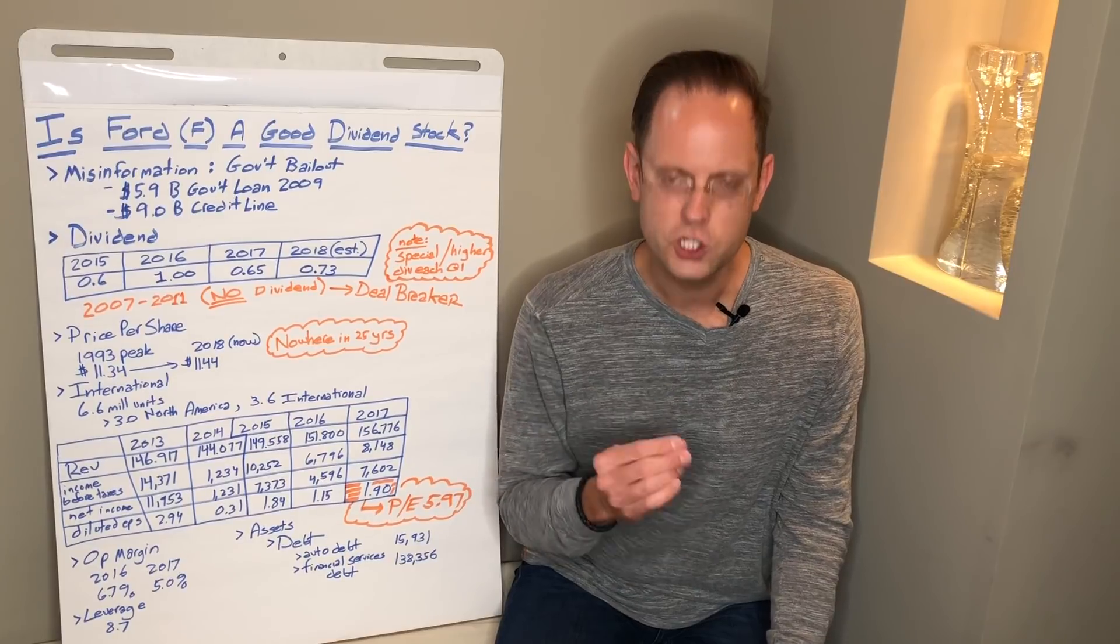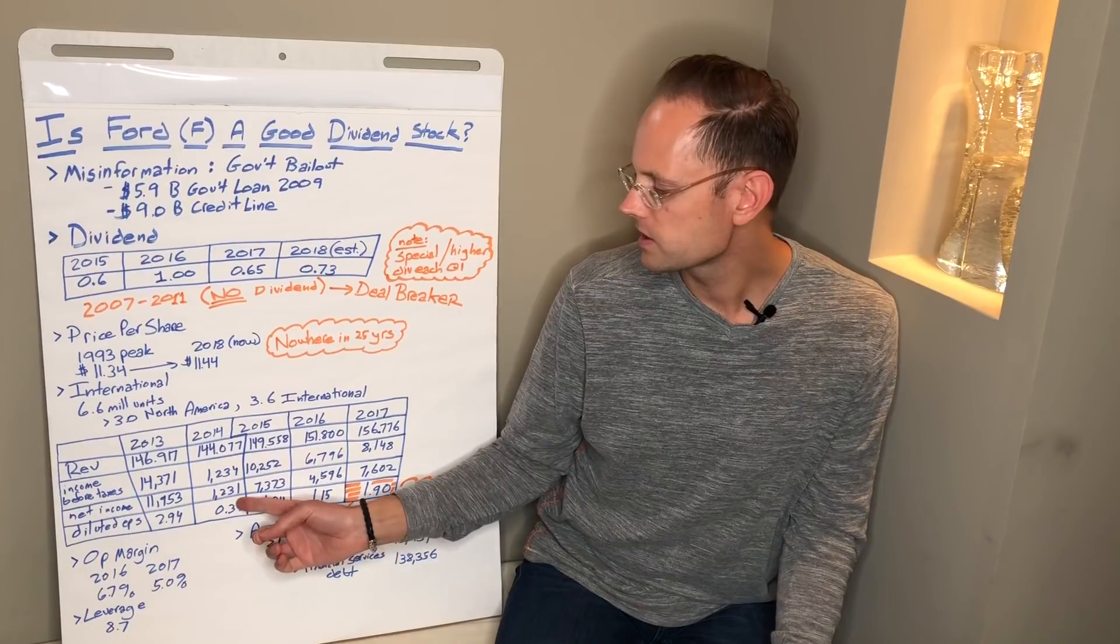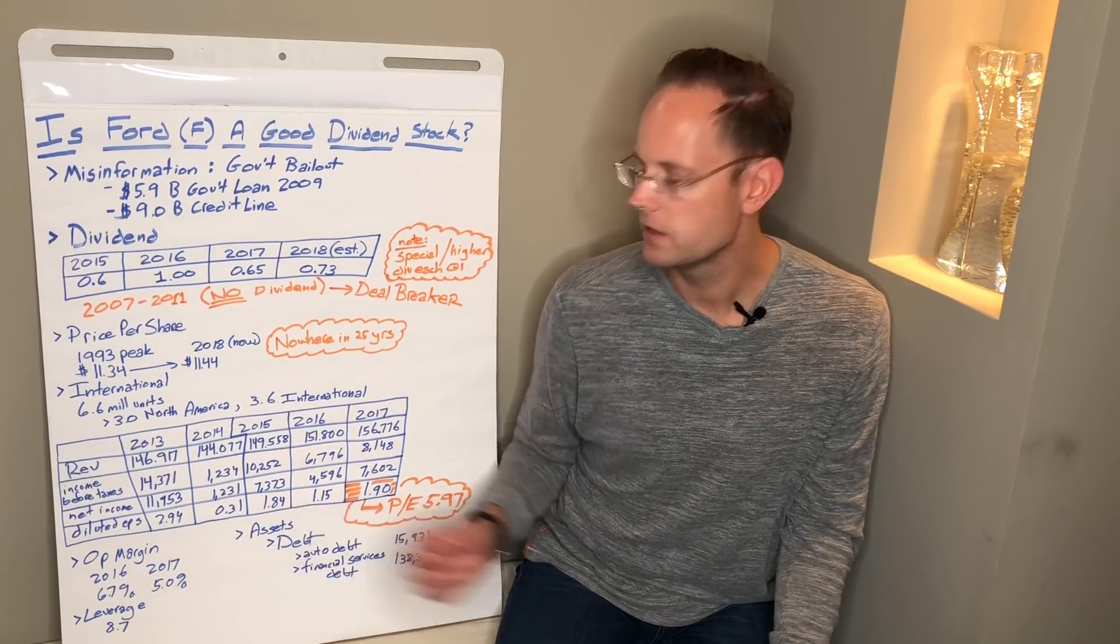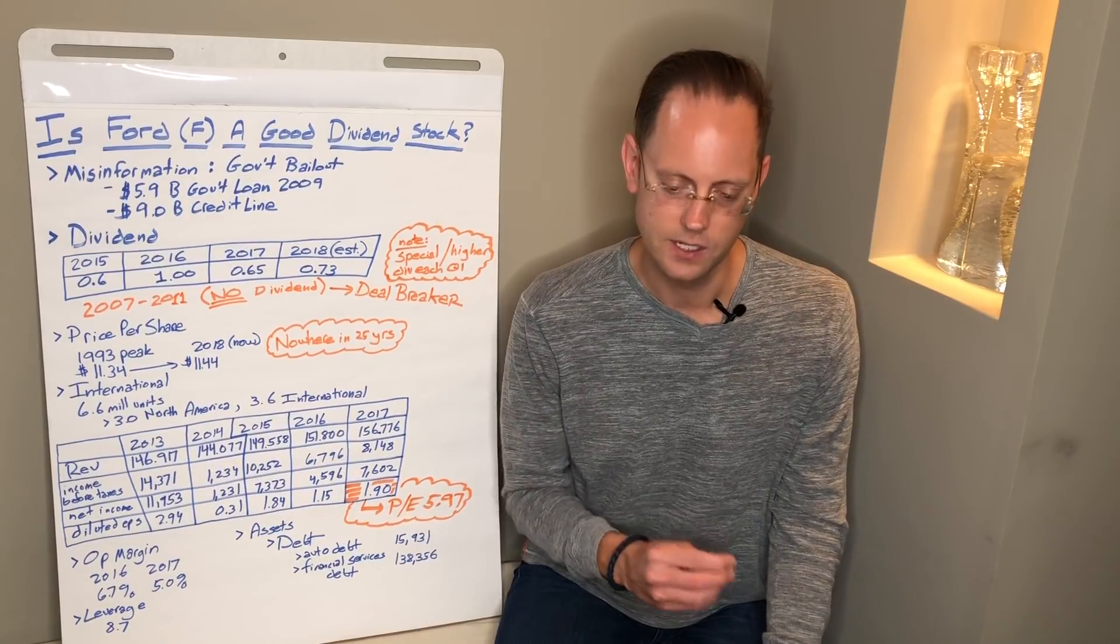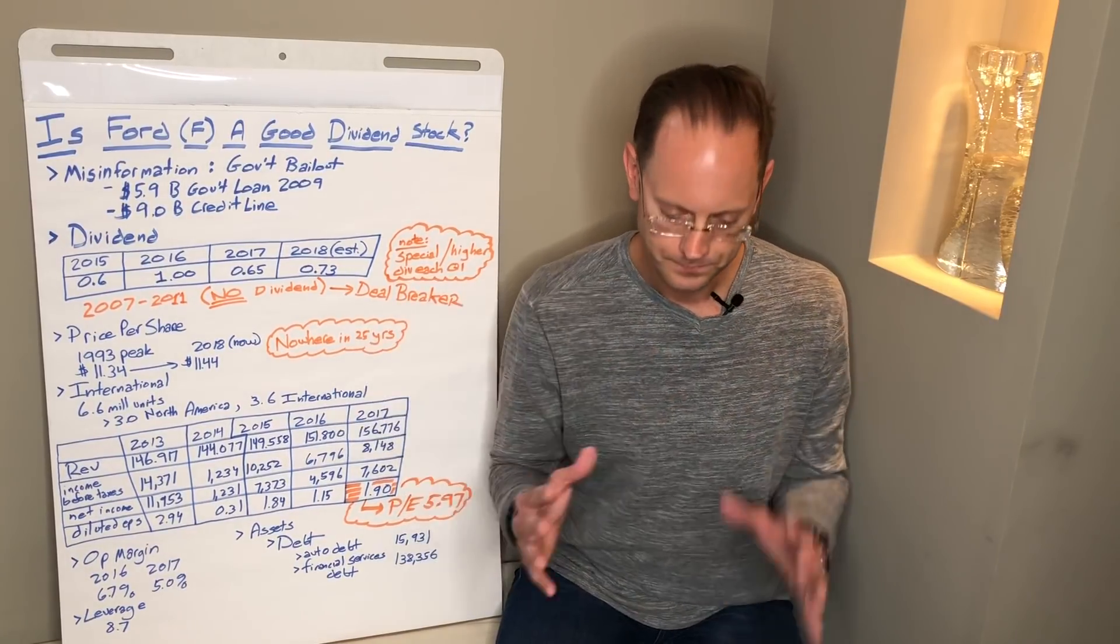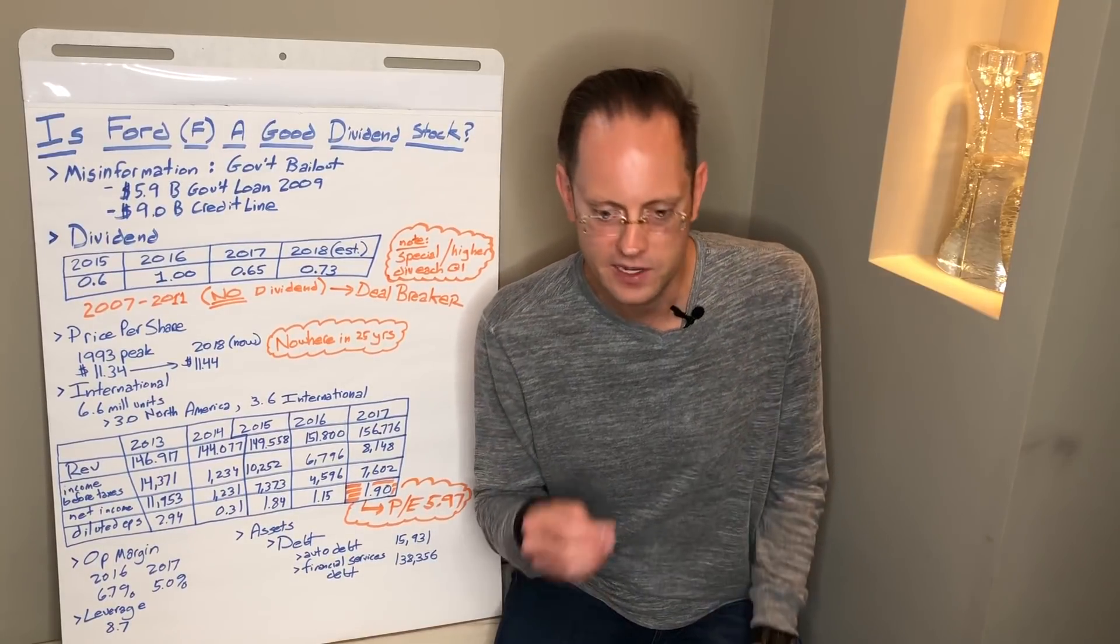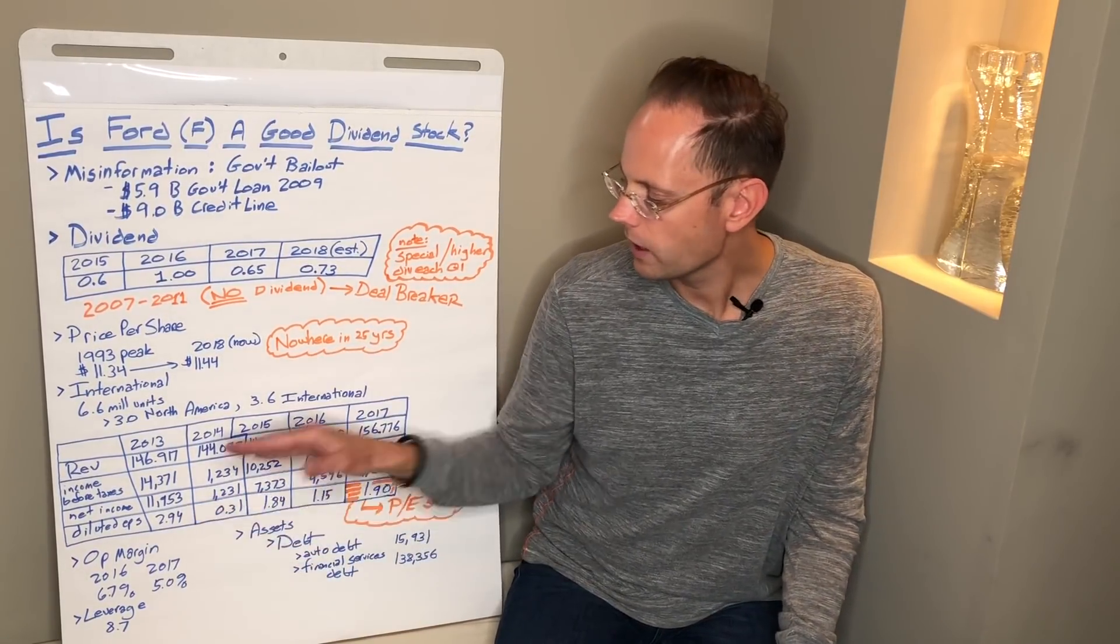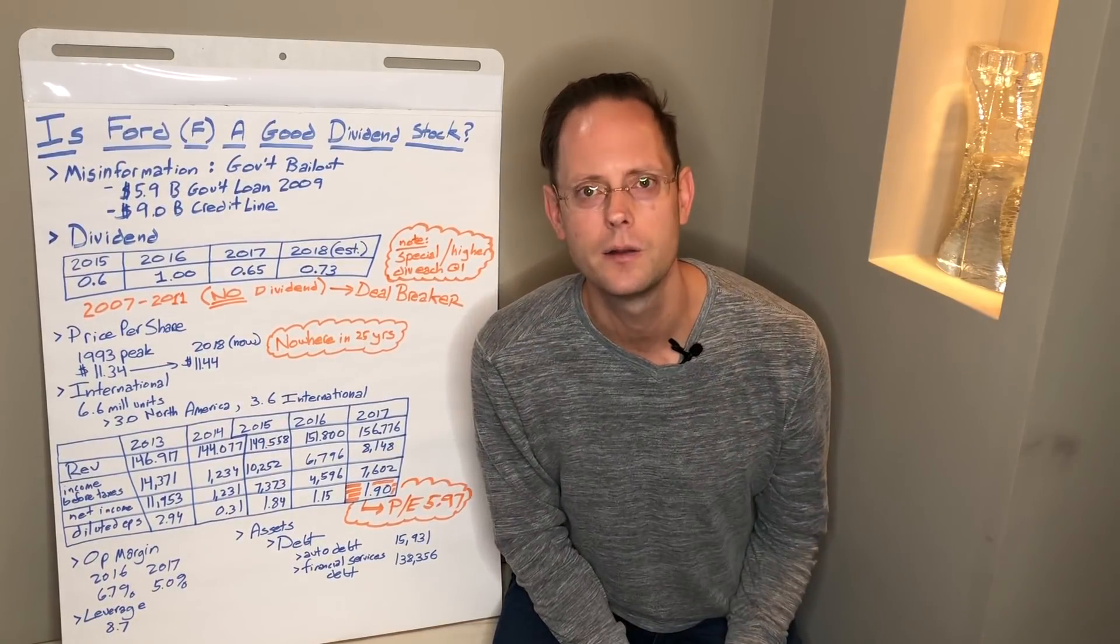Diluted earnings per share. The earnings per share on this company were $2.94 in 2013, $0.31 in 2014, $1.84 in 2015, $1.15, and then $0.90 in 2017. Again, it's all over the map. It's cyclical. Although I imagine it would be much more pronounced if we were actually in a bad economy. Look how crazy these numbers are up and down in a very good economy.